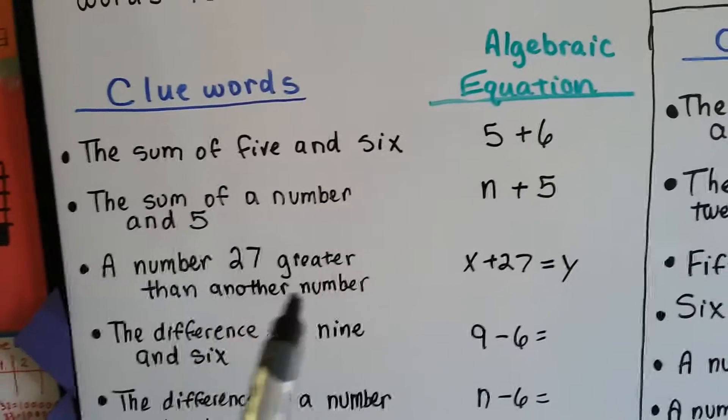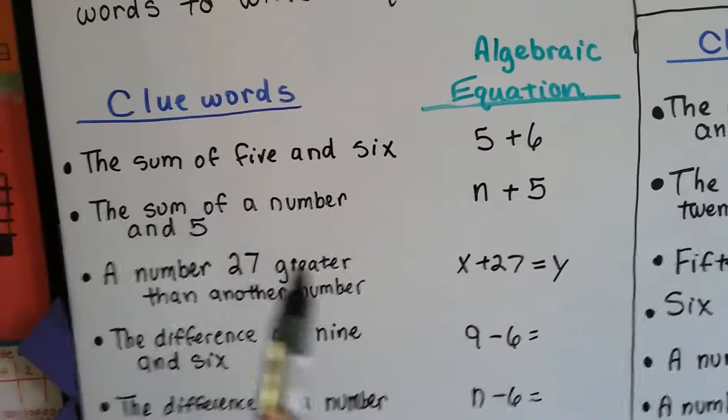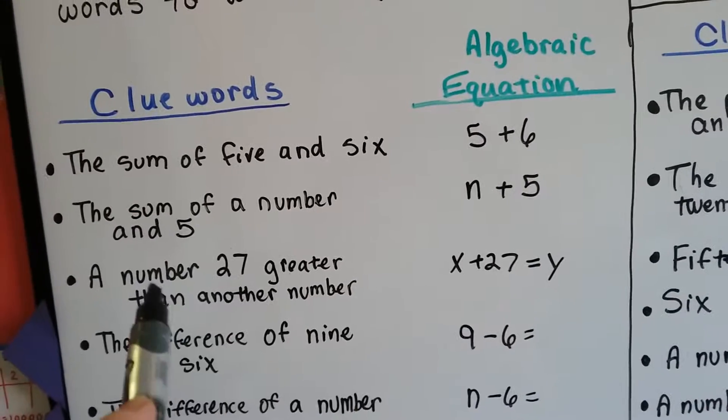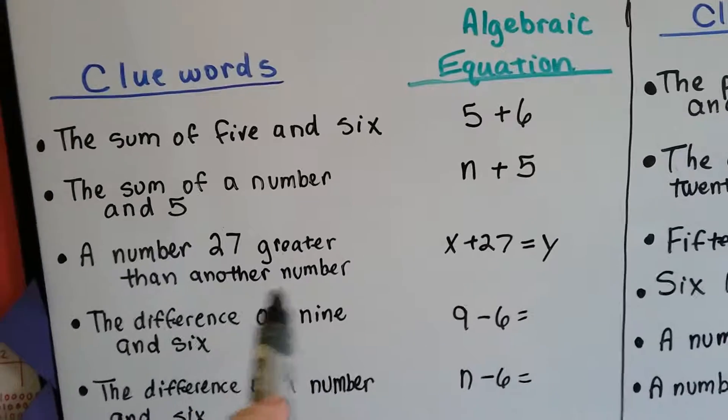A number 27 greater than another number tells us that it's going to add 27. We can use x for our first number and y for the another number. That tells us it's a second number.